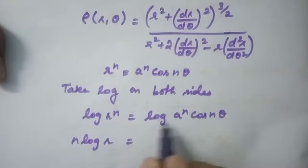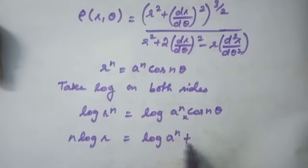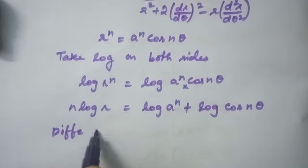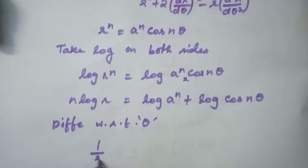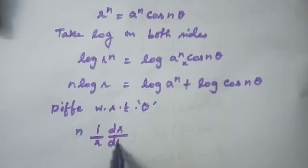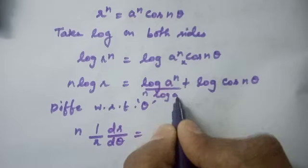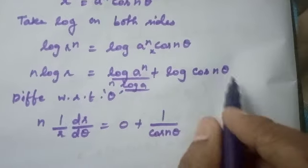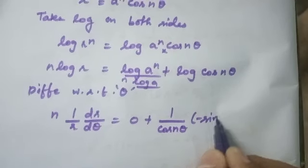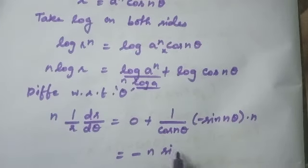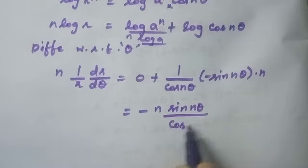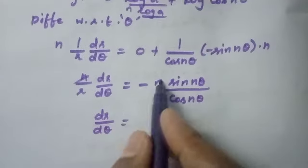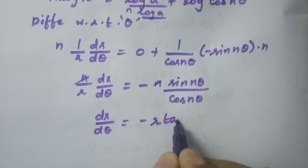Differentiating both sides with respect to θ: (n/r)·(dr/dθ) = 0 + (1/cos(nθ))·(−sin(nθ))·n. Simplifying, n and n cancel, so dr/dθ = −r·sin(nθ)/cos(nθ) = −r·tan(nθ).